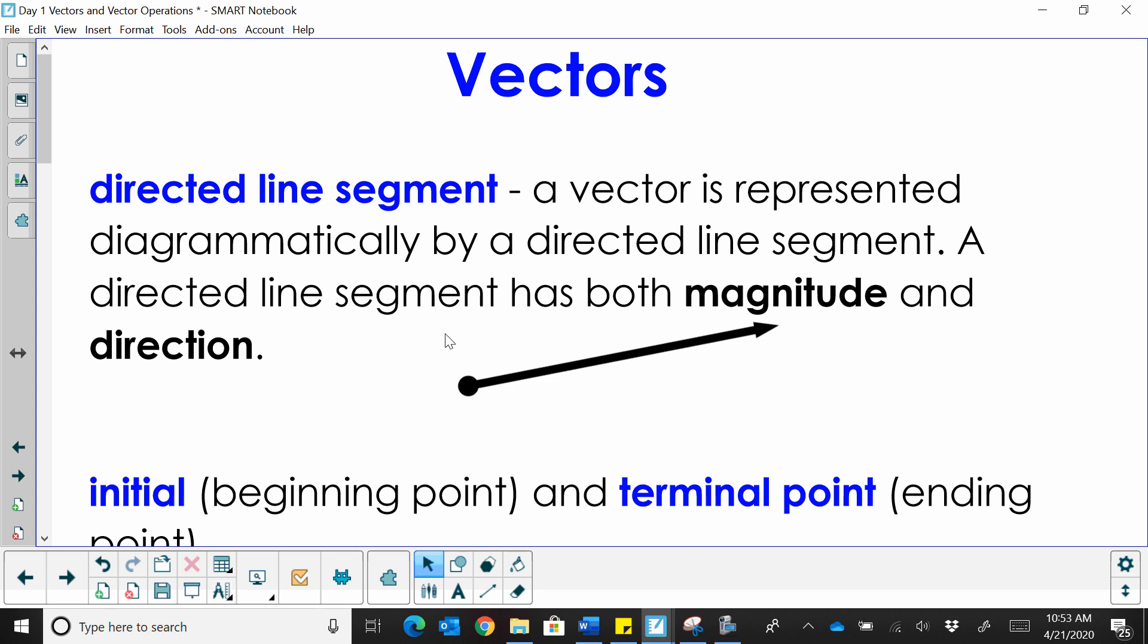So let's talk about what you need to know about vectors. First of all, a vector is a directed line segment, meaning it has a direction and it's a segment. Now we draw it as a ray, but because it's a segment, it has a specific length. So a vector is represented by a directed line segment with a beginning and an ending point. It has a magnitude, which is also known as a length and a direction.